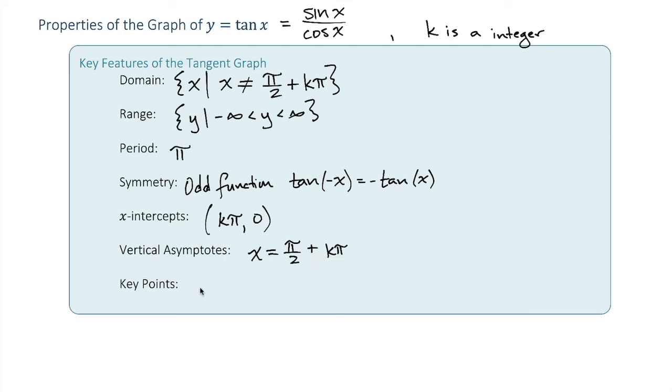And then we have key points. The key points of the tangent function are going to be when sine and cosine have the same magnitude, the same number, either positive or negative. So when sine and cosine are equal to, when x is equal to pi over 4,